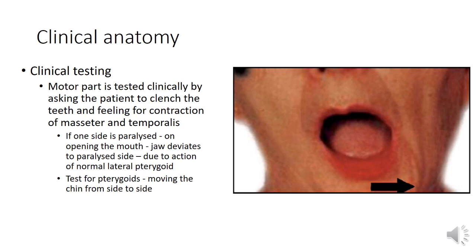Having covered all the branches of the mandibular nerve, we now move on to clinical anatomy. The motor part of the mandibular nerve is tested clinically by asking the patient to clench the teeth and feeling for contraction of the masseter and temporalis, since the mandibular nerve provides motor supply to all the muscles of mastication. If the mandibular nerve of one side is paralyzed, on opening the jaw it deviates to the paralyzed side due to the unopposed action of the normal lateral pterygoid of the opposite side.